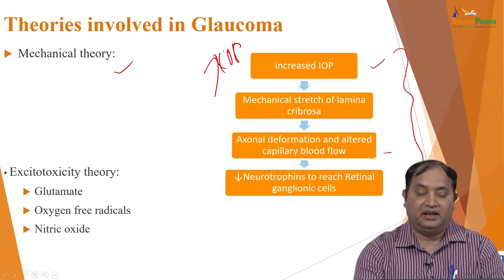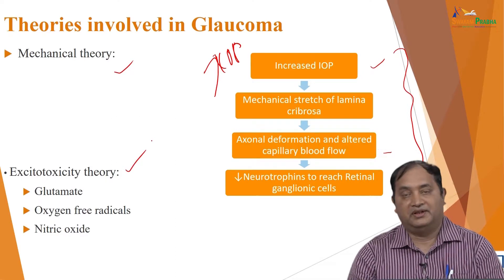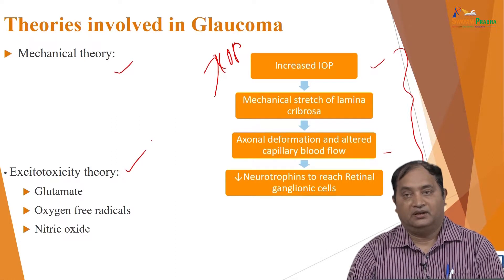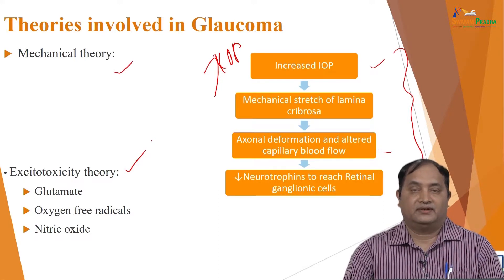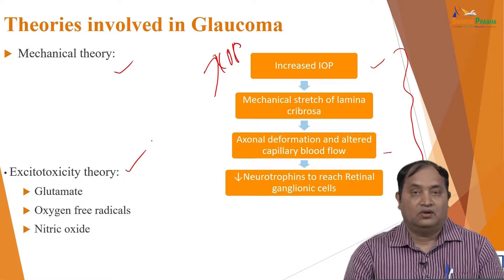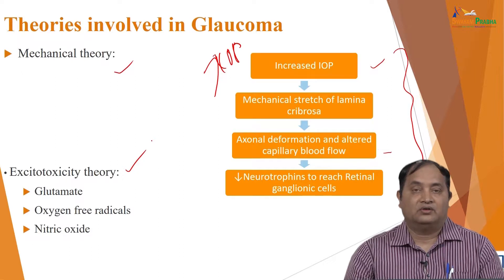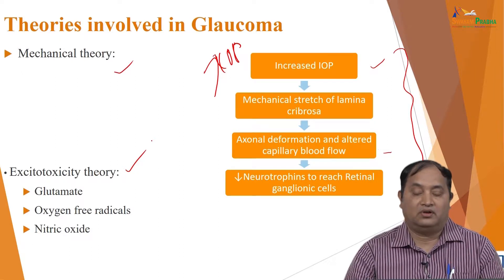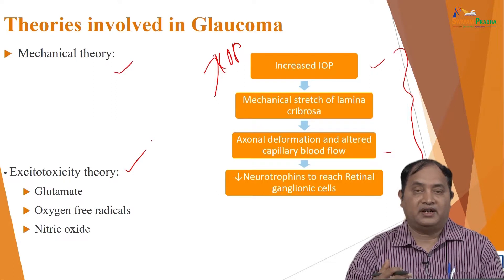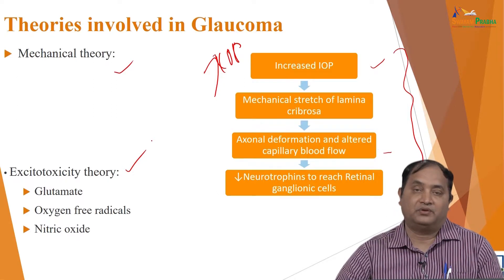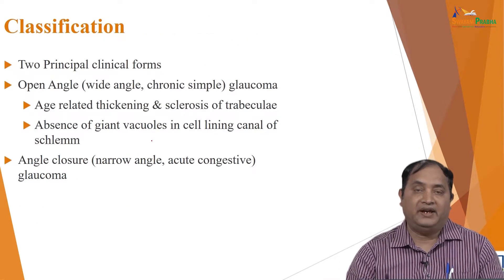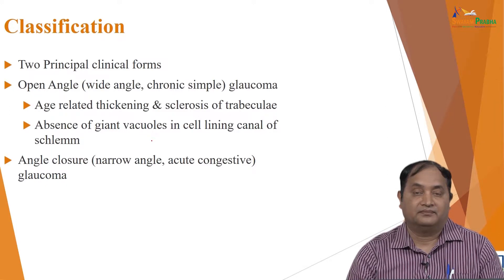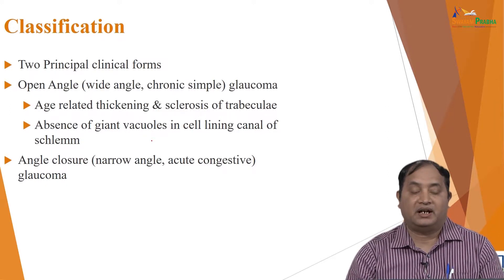Another theory is the excitotoxicity theory. In excitotoxicity, excitatory amino acids are released — like glutamate, glycine — along with oxygen free radicals and nitric oxide. These damage the optic nerve and retinal cells. These are the theories explaining how there is damage to the optic nerve and visual loss, based on pathogenesis and molecular mechanisms.